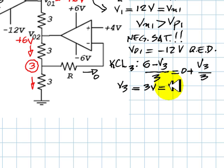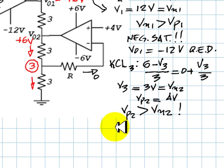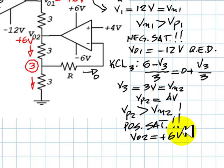V3 is 3V. But that happens to be Vn for the second OPAMP. Vp for the second OPAMP continues to be 4V. Vp for the second OPAMP is positive 4V. So indeed, Vp of the second OPAMP is greater than Vn of the second OPAMP. And that proves that that OPAMP is positively saturated. VO2 is positive 6V.